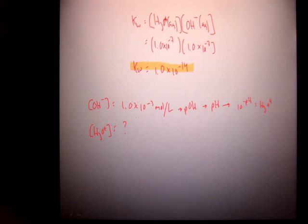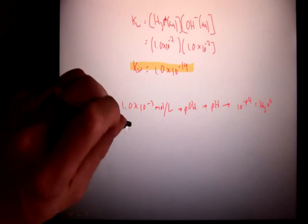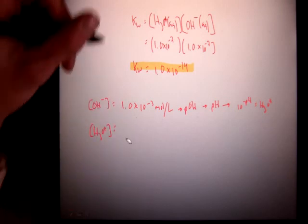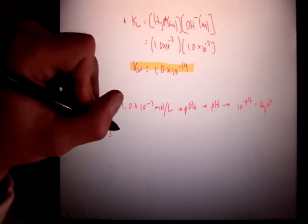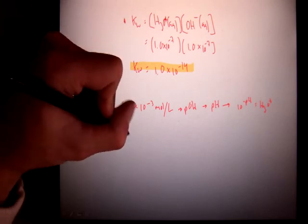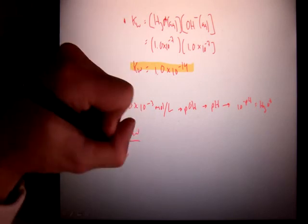This Kw expression allows you to do it in one step. So if I was to rearrange my Kw formula to solve for hydronium, it would simply be Kw over OH minus.